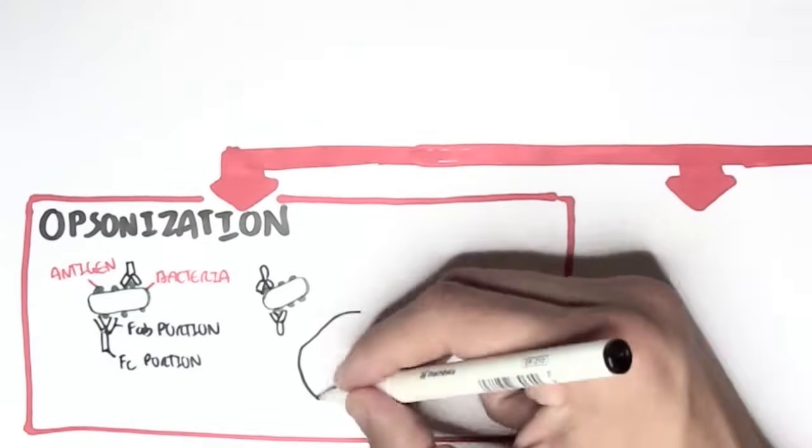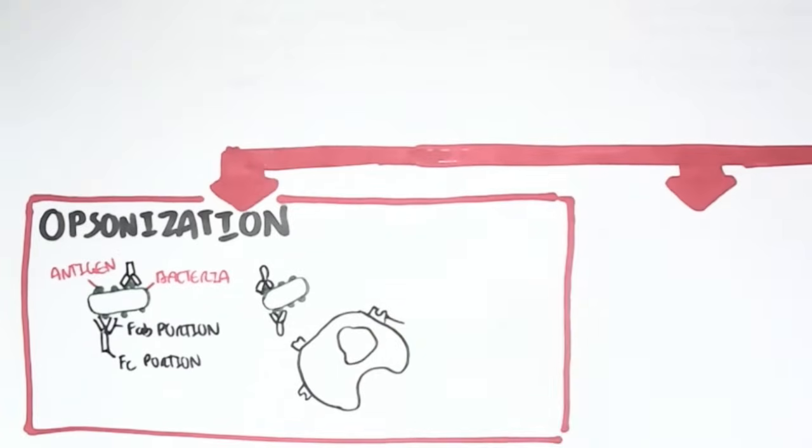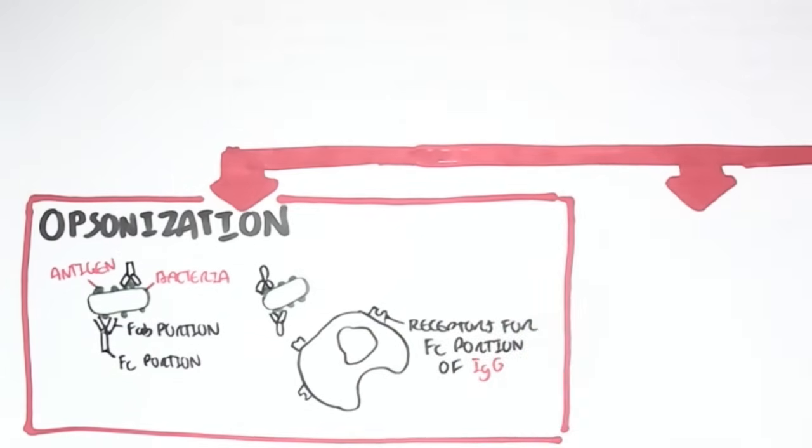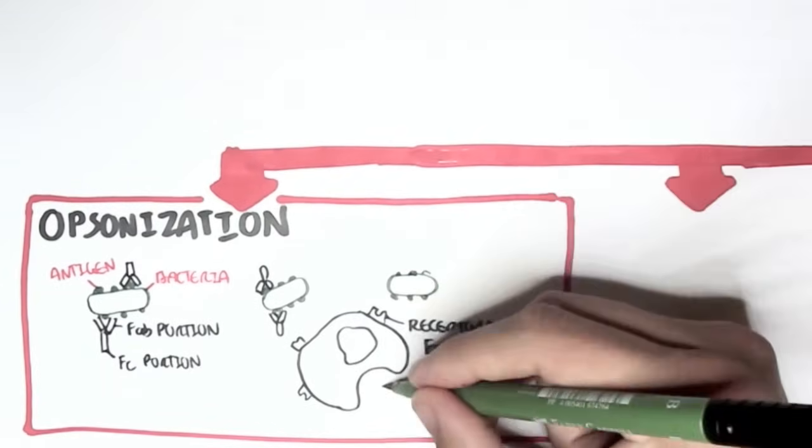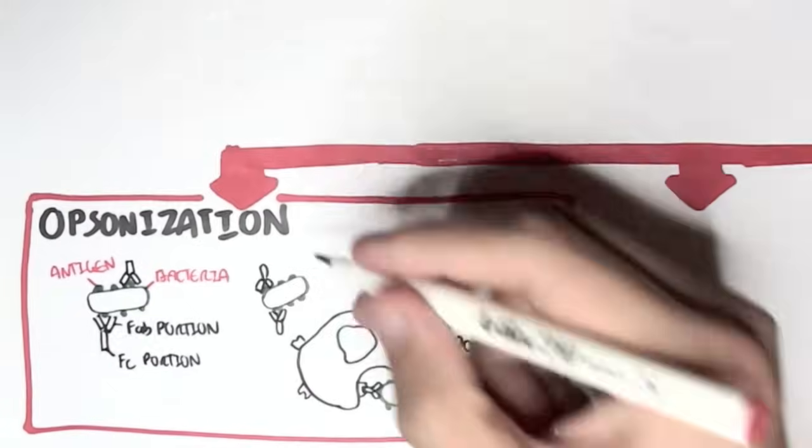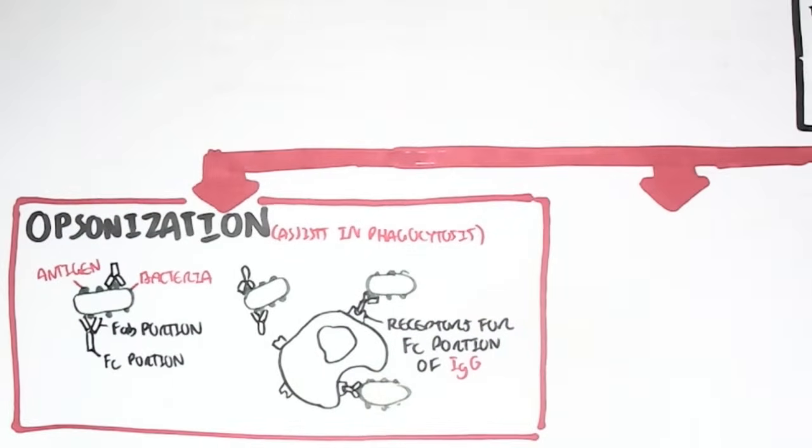the FC portion is sticking out. And with the FC portion sticking out, the FC portion can be easily detected by phagocytes, such as a macrophage, because the macrophages have receptors for the FC portion of IgG. And so when it binds, the bacteria which is bound to the antibody, which is bound to the phagocyte, the phagocyte can easily engulf the bacteria.